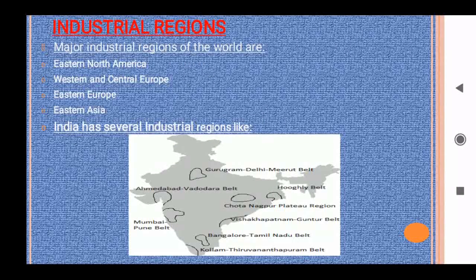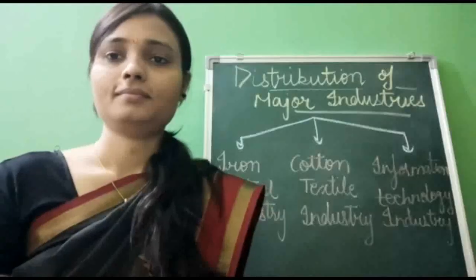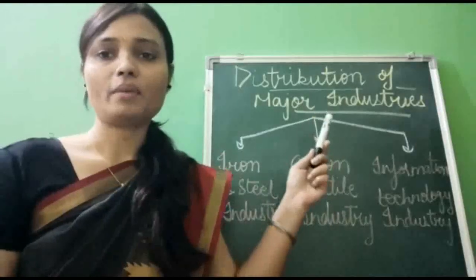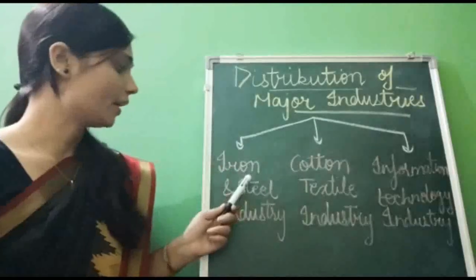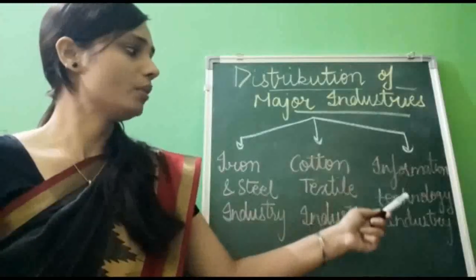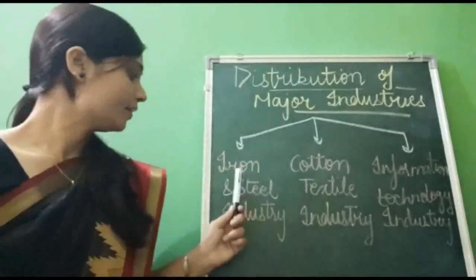Now let us learn about industrial regions. Industrial regions emerge when a number of industries locate close to each other and share the benefits of their closeness. Major industrial regions of the world are Eastern North America, Western and Central Europe, Eastern Europe, and Eastern Asia. As seen on the map, India also has several industrial regions. The major industries covered in this chapter are iron and steel industry, cotton textile industry, and information technology industry.